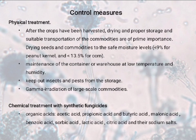Now what are the control measures for fungal contamination? There are three types of control measures: physical treatment, chemical treatment, and treatment with natural herbs and plants. For physical treatment, after crops have been harvested, proper drying, storage and suitable transportation of commodities are of prime importance. Drying seeds and commodities to safe moisture levels — less than 9% for peanuts and less than 13.5% for corn crops — is essential. Maintenance of containers or warehouses at low temperature and humidity is key, as temperature and humidity play a very important role in fungal growth. Keeping out insects and pests from storage, and gamma irradiation of large-scale commodities, are also required.